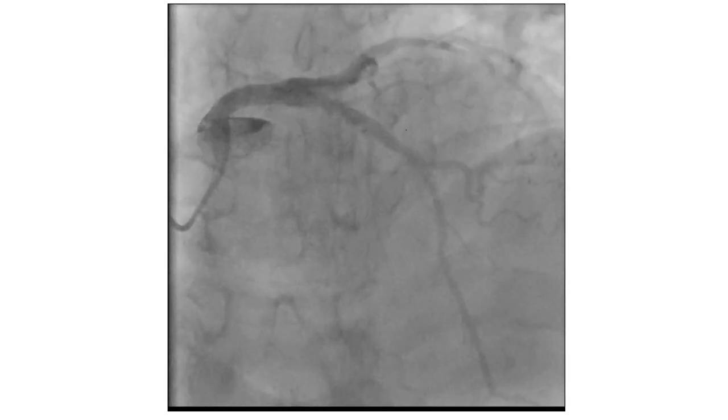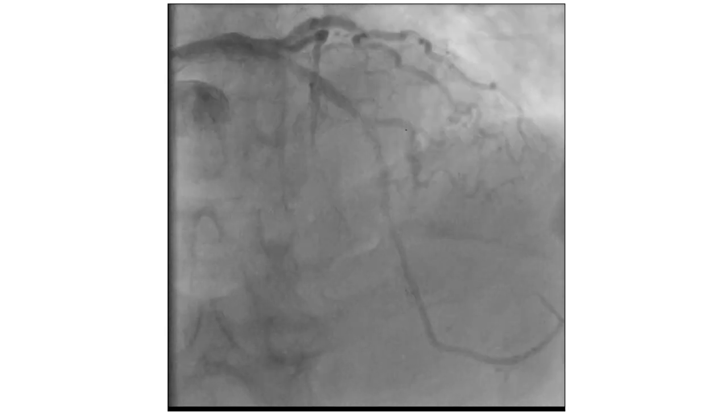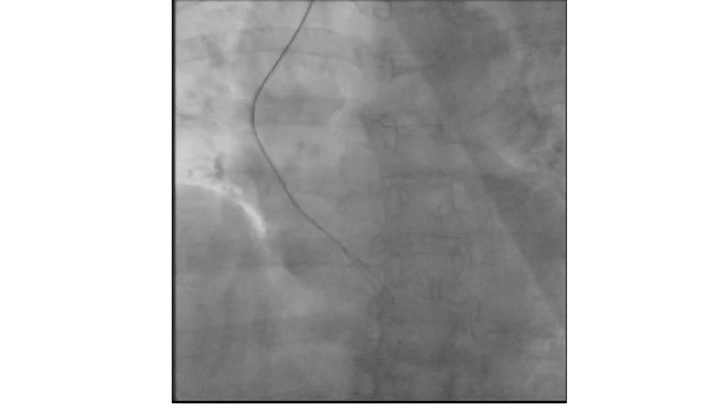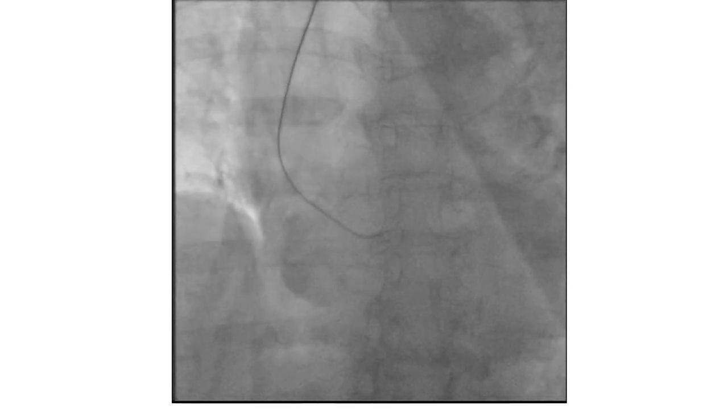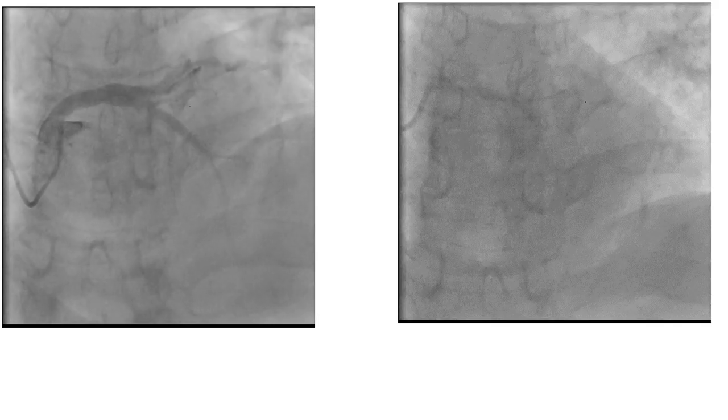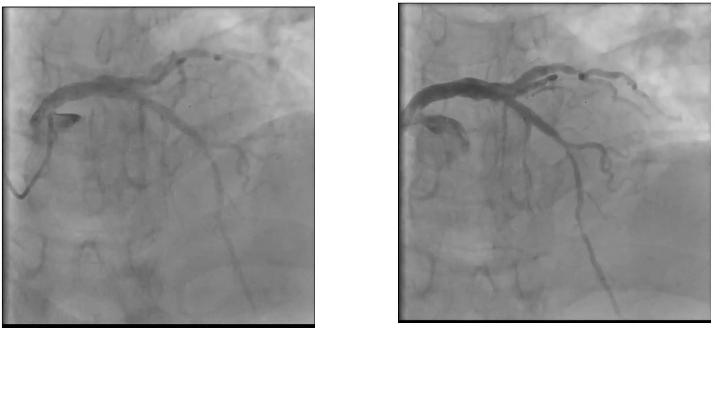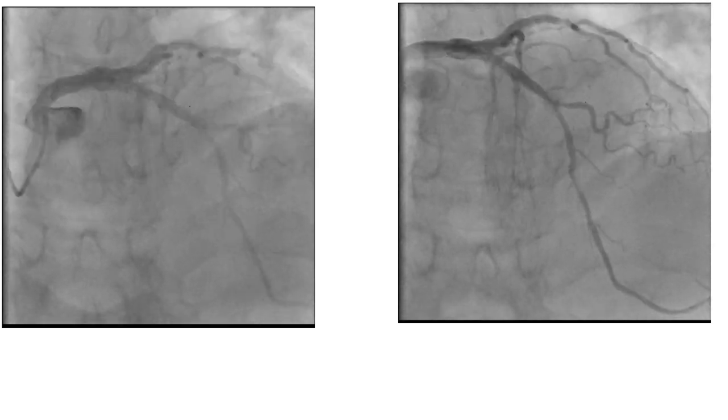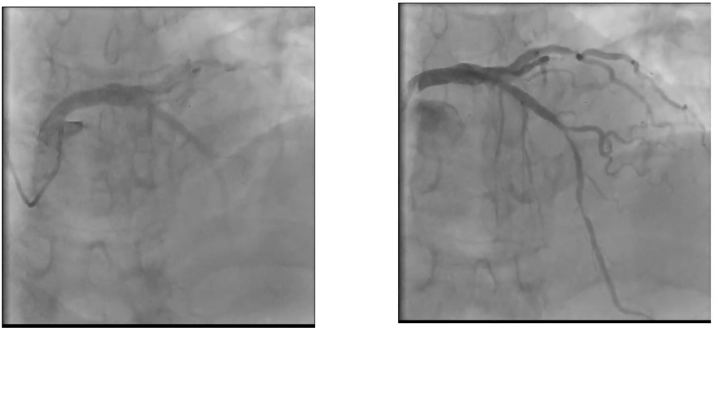This is a spider cranial view of the same case showing the LAD. A larger catheter was taken and it engaged the left coronary in a better way. As seen here with comparison of both angios, the left one shows the angiography with a small catheter, while the right one shows the optimal size larger catheter with optimal angiography.